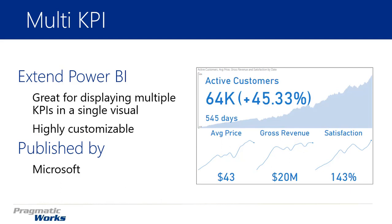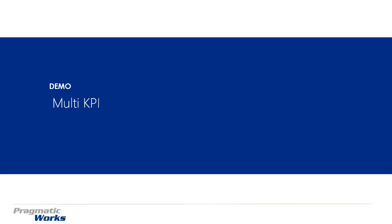It's incredibly customizable — you're going to see as we get into it that it has a lot of different things you can click and change. Colors, print settings, and many other options are available. This is really useful when you have a KPI you want to show with some supporting measures, and sparklines below can be incredibly useful for this. This one is developed by Microsoft, so let's jump into how you can use the multi-KPI in an example.